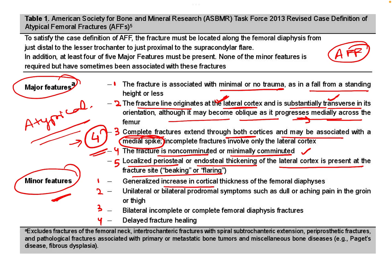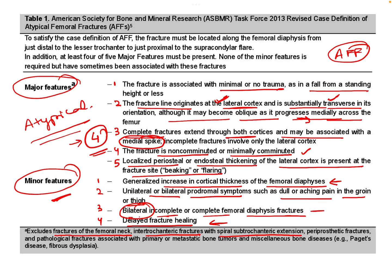The minor features include: increased cortical thickness of the femoral diaphysis region; unilateral or bilateral prodromal symptoms such as dull or aching pain in the groin or thigh; bilateral complete or incomplete femoral diaphysis fracture; and delayed fracture healing seen at other fracture sites. These criteria exclude fractures of the femoral neck, intertrochanteric fractures with subtrochanteric spiral extension, periprosthetic fractures, and pathological fractures associated with primary or metastatic bone tumors and miscellaneous bone diseases like Paget's disease or fibrous dysplasia.